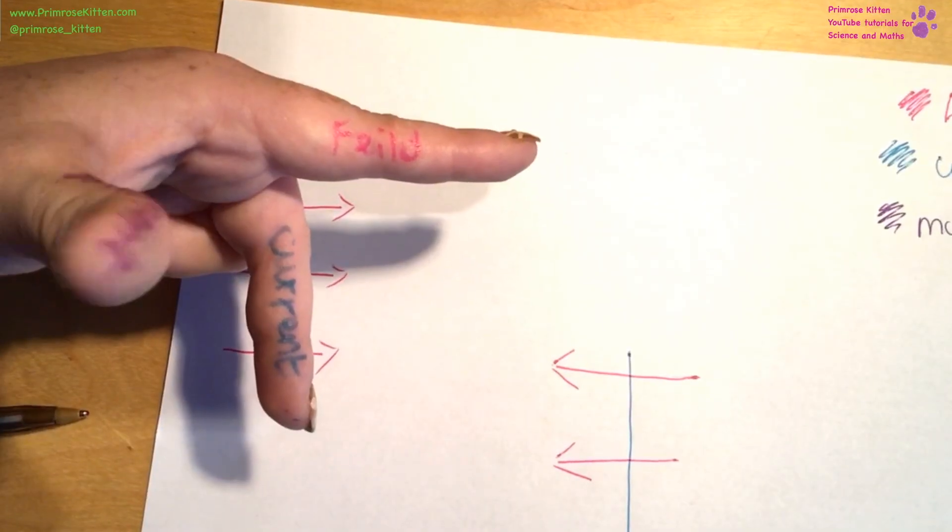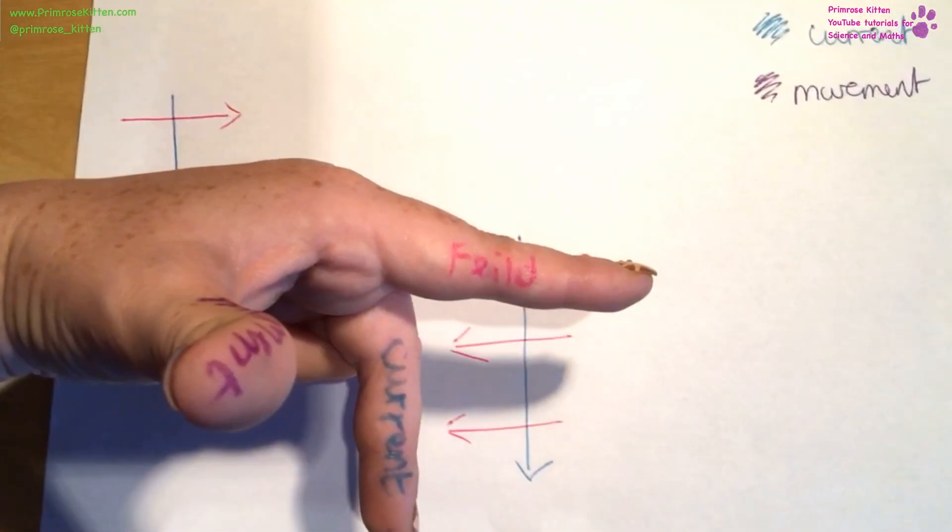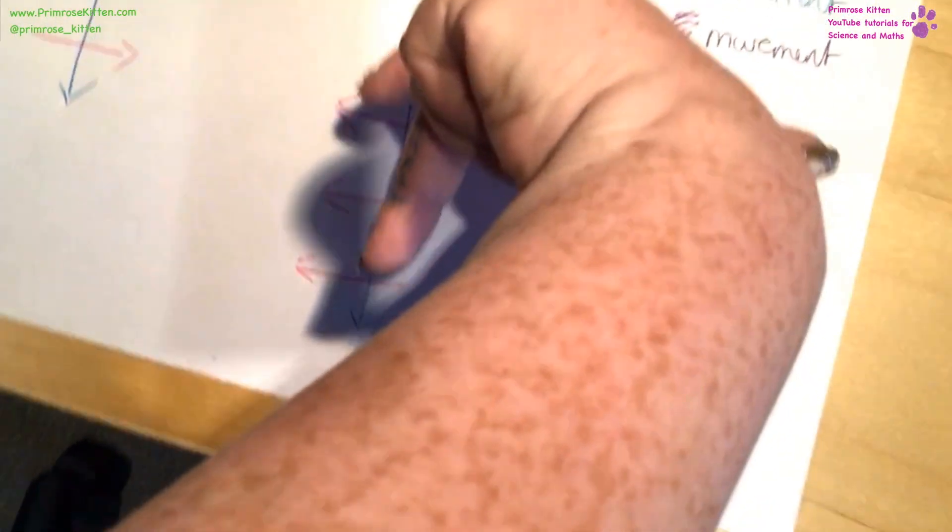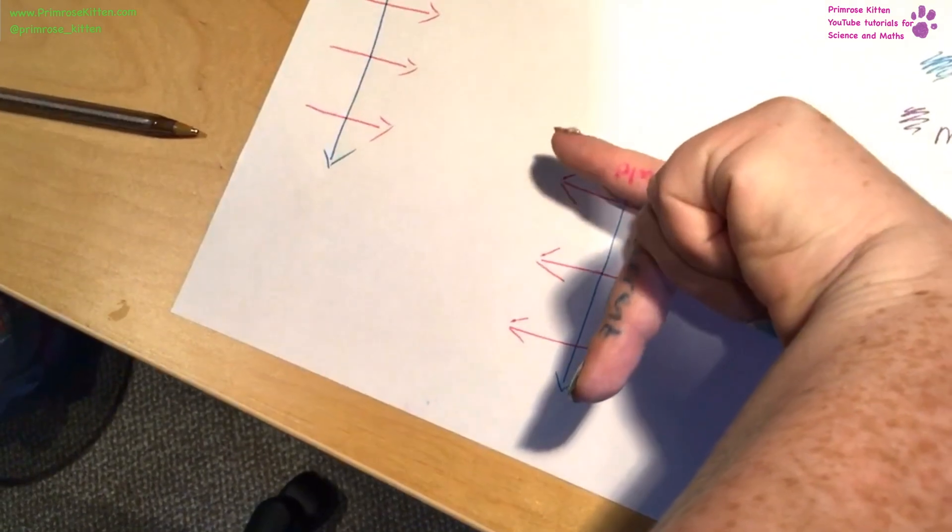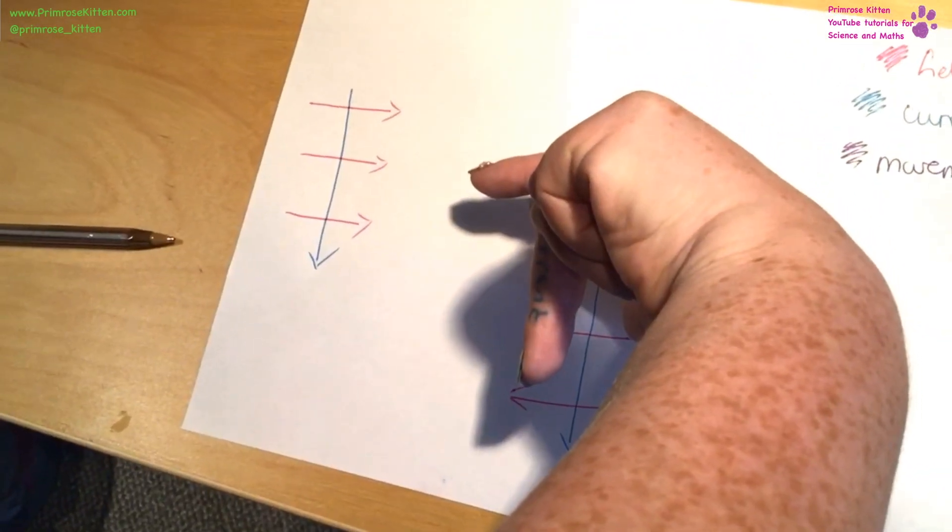So first it's nice and easy. My field is going in that direction, my current is going in that direction, so the movement of the force is going upwards. This one here is a bit more complicated because this finger needs to be pointing in that direction, my current needs to be going down, and then my thumb is going into the page.